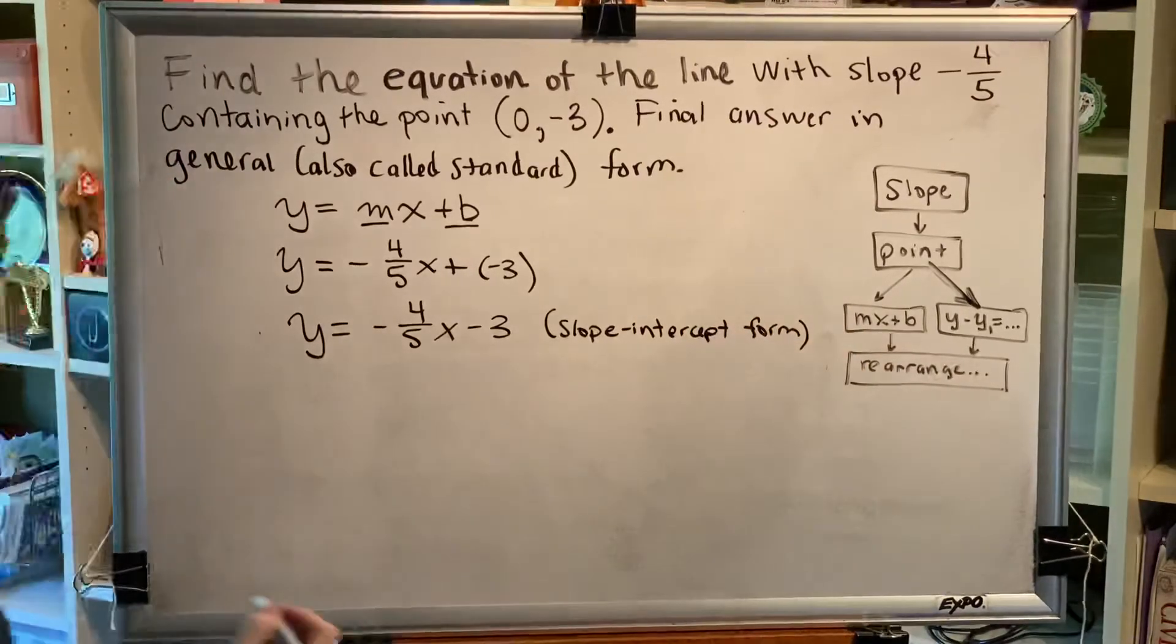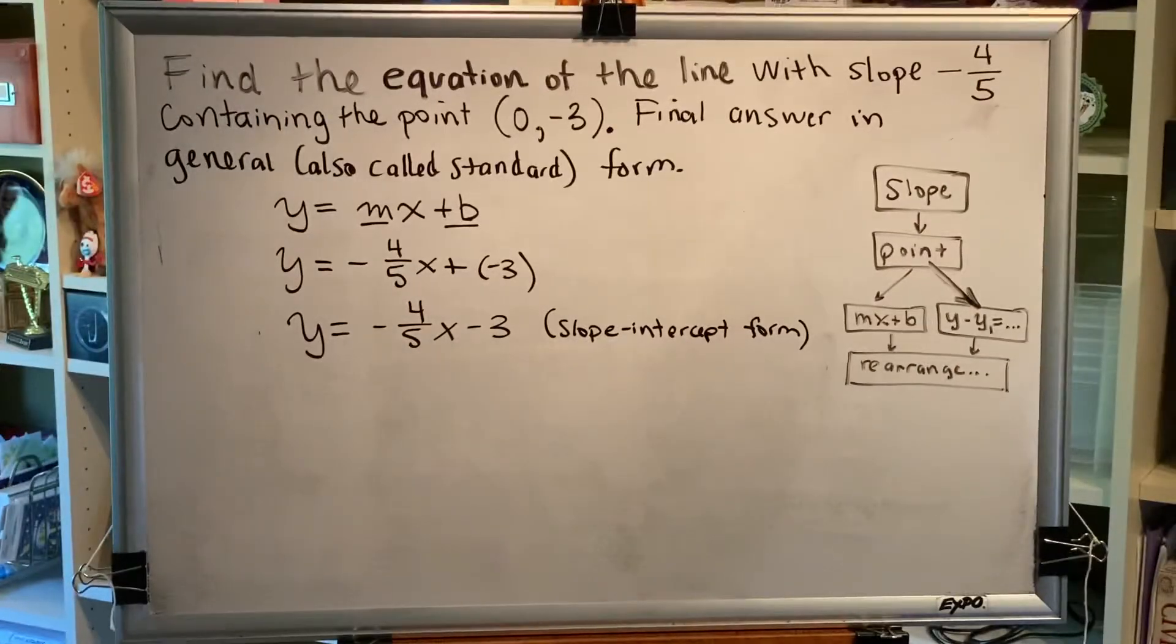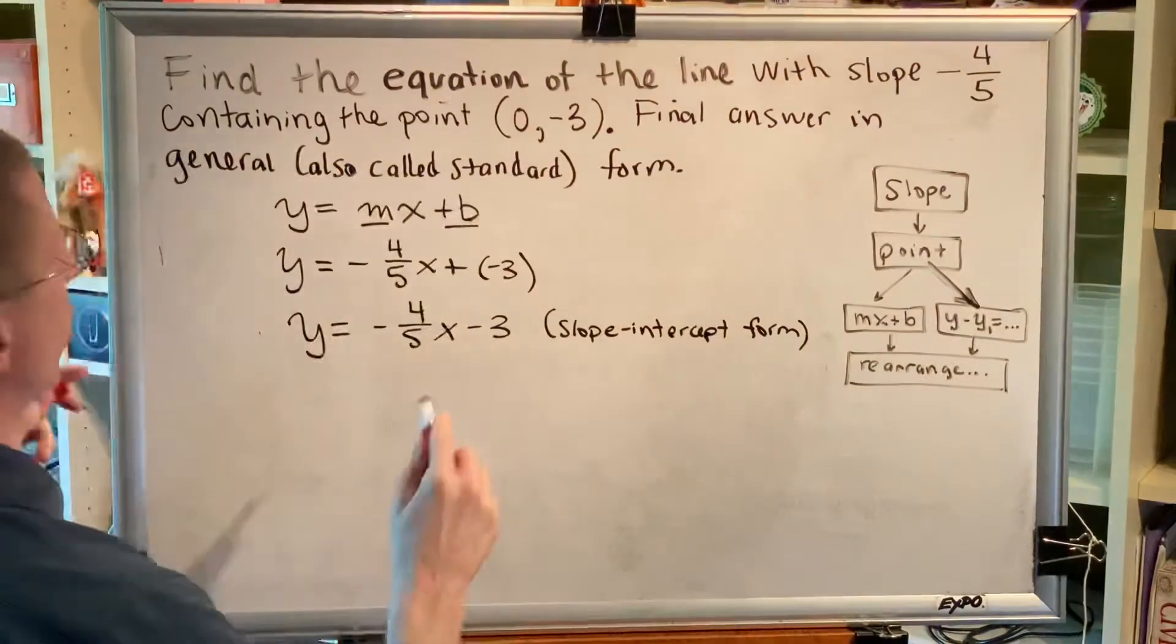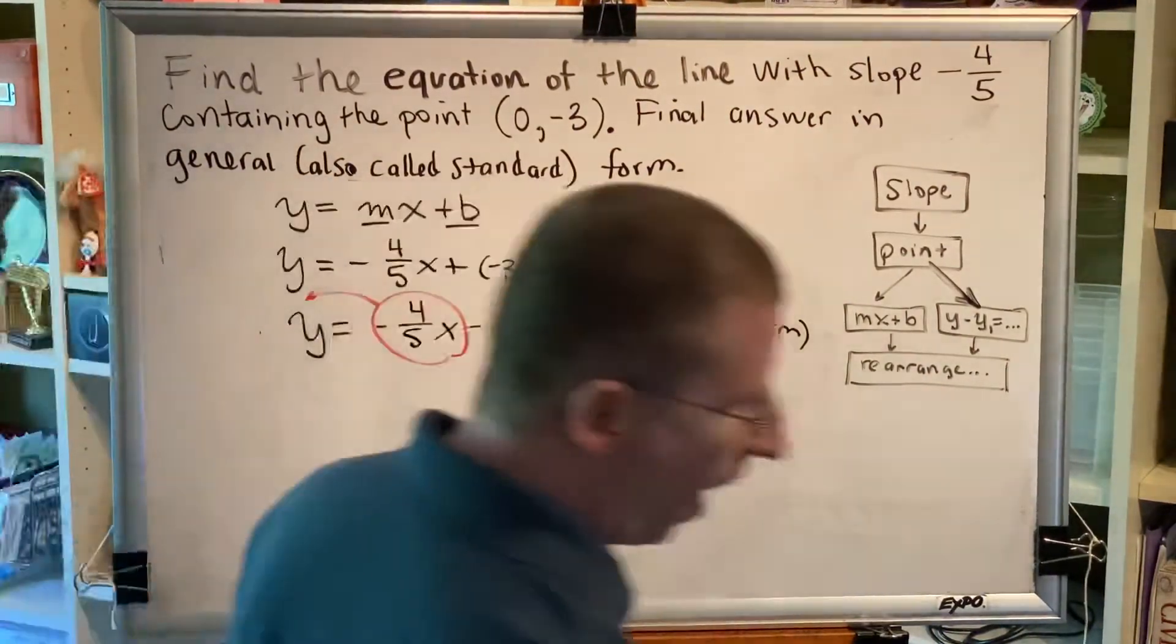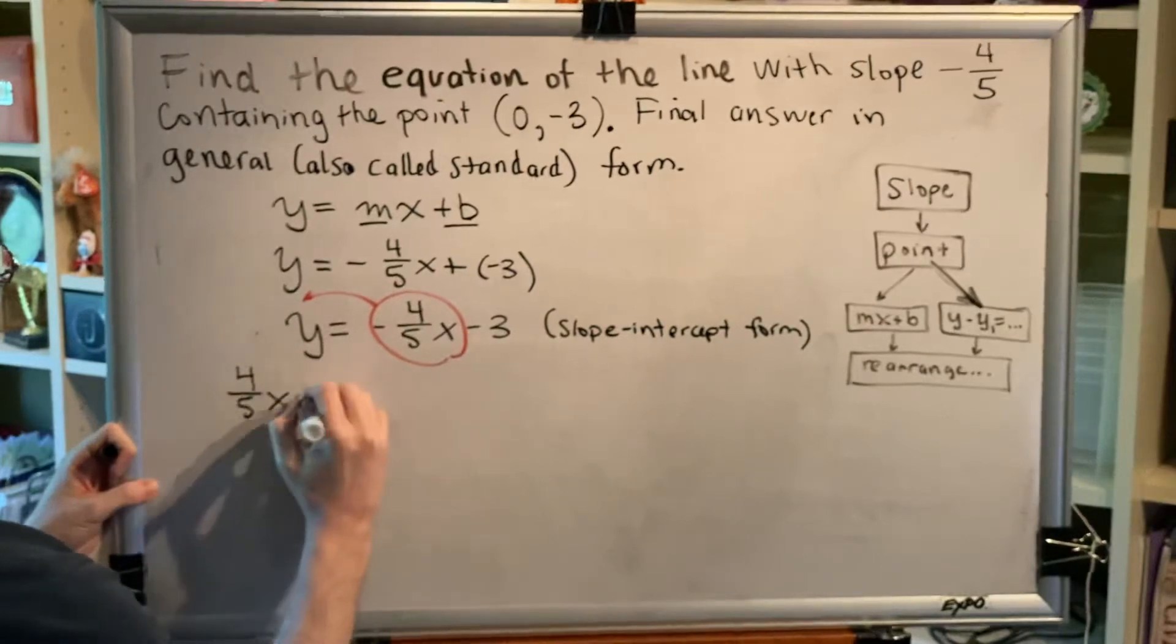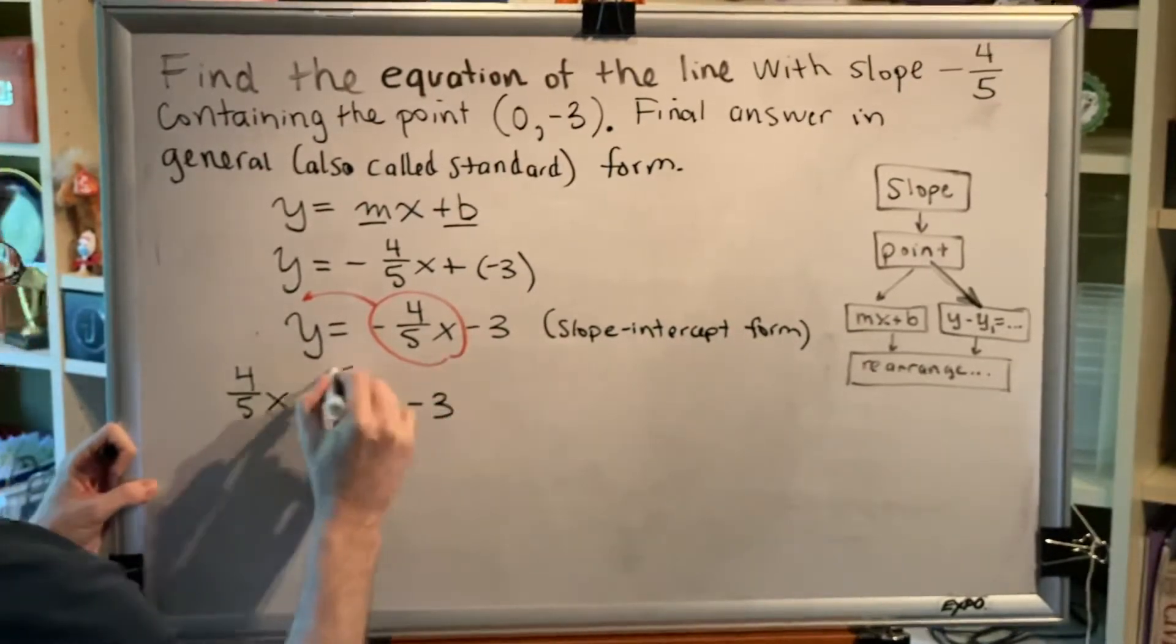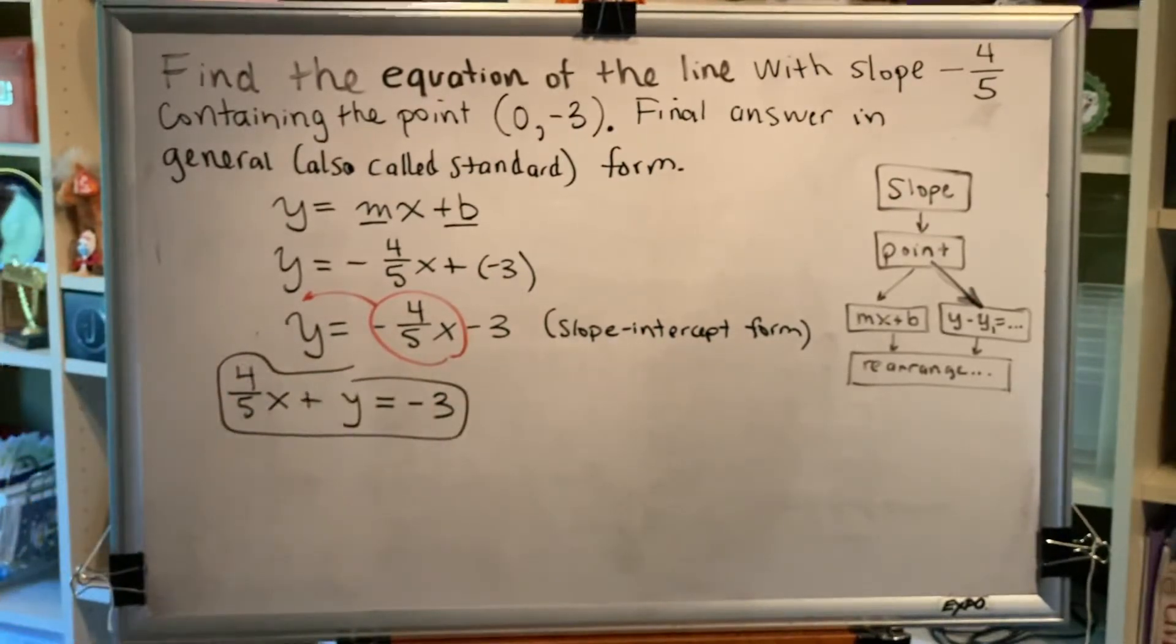However, instructions for this problem say that our final answer needs to be in ax plus by equals c form. To achieve that is very simple. We just pick up the one term that's in the wrong place and move it to the other side. And we remember that when a term changes sides, it changes signs. So we get positive four-fifths x plus y equals negative three. This is our final answer in the standard, also called general form.